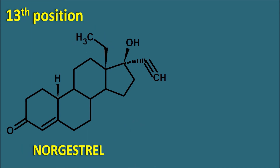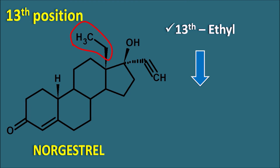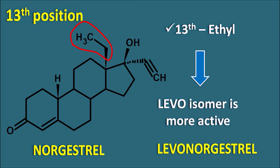At the 13th position, normally a methyl group is attached, which becomes the 18th methyl group. But in norgestrel, an ethyl group is attached at the 13th position. A 13th-position ethyl group results in drugs with progesterone-like activity and better absorption. Among these drugs, the levo-isomer is more active, giving us levonorgestrel. Levonorgestrel has greater activity compared with progesterone due to the ethyl group at the 13th position. The norgestrel nucleus is the androstane nucleus, making it a derivative of ethisterone, which also has the 17-alpha-ethinyl group.